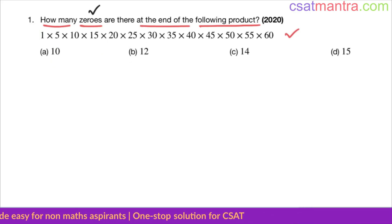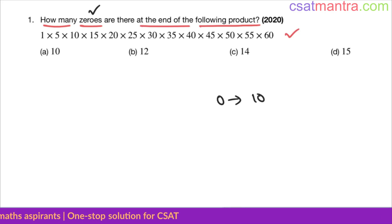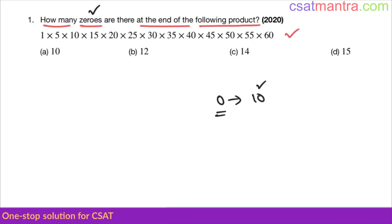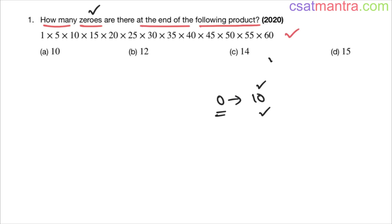Now, how many zeros? A zero means 10. In 10 we have a zero, so the number of zeros means the number of tens — this is what we have to find out. How many tens are there in this problem? We can find certain tens directly, and certain tens are hidden. We'll look at the direct tens first.